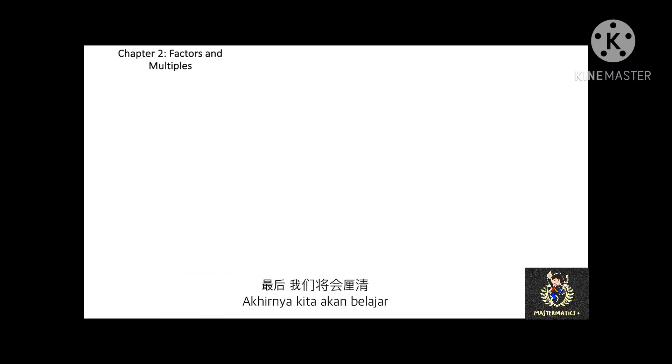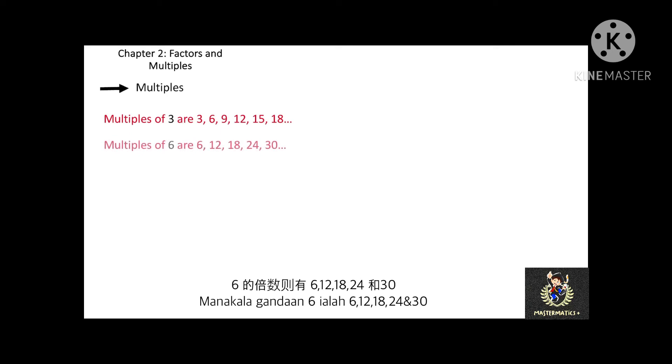Now let's move to multiples, common multiples, and lowest common multiples. See the example. Multiples of 3 are 3, 6, 9, 12, 15, and 18. And multiples of 6 are 6, 12, 18, 24, and 30.